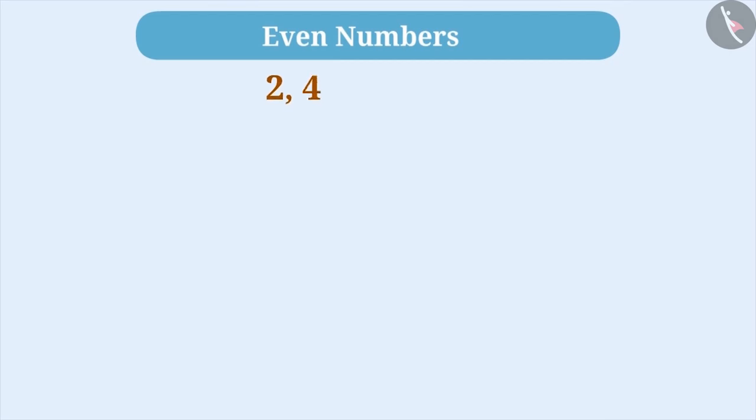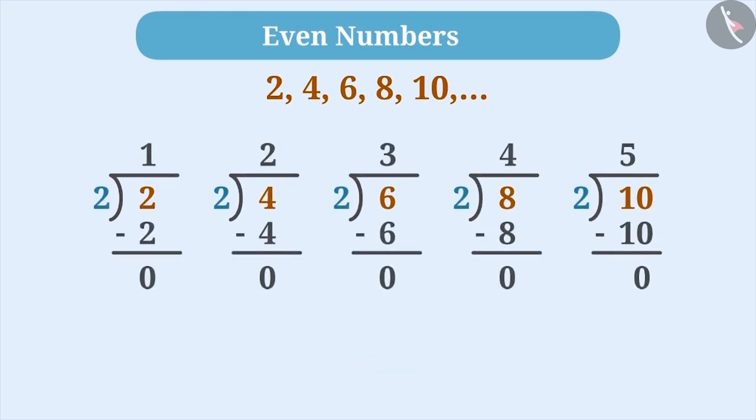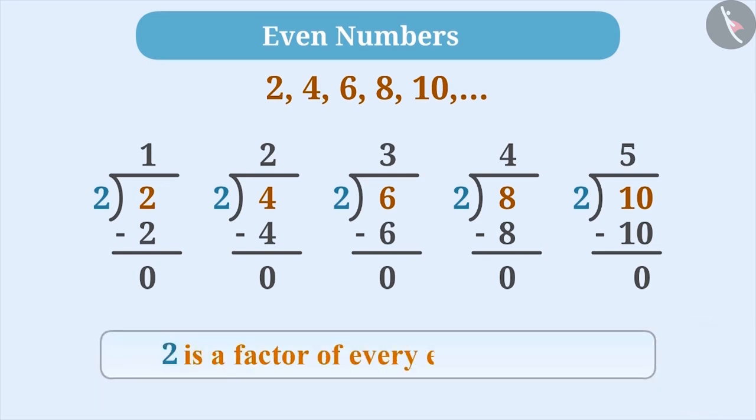Now let's divide even numbers such as 2, 4, 6, 8, 10, etc. by 2. Do you always get 0 as remainder? Yes, you always get 0 as remainder. 2 is a factor of every even number.